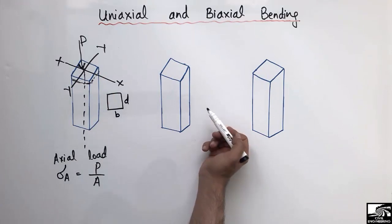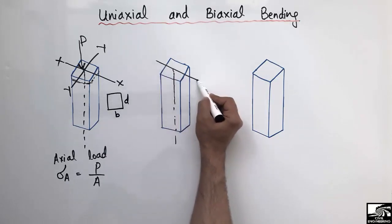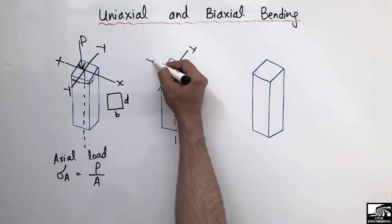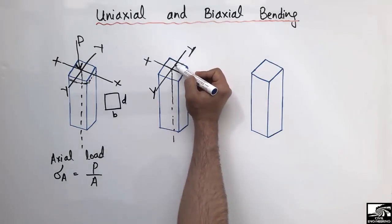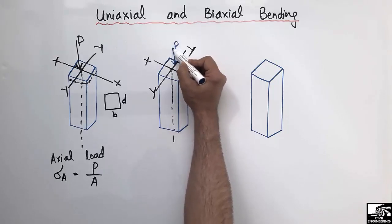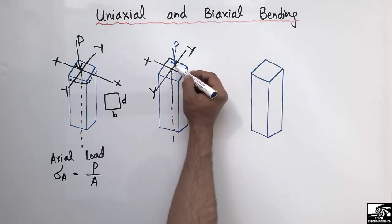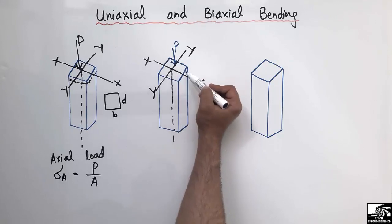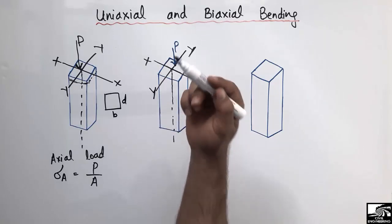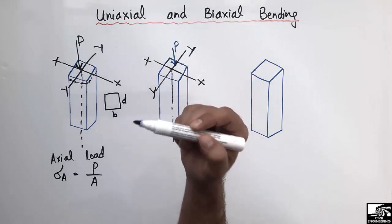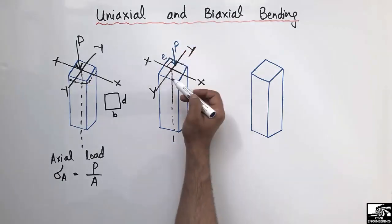Now let's consider the other two types of bending. Consider a column again with its x-axis and y-axis. Now let the load P act away from the center of the column — along the y-axis it is away from the center, but along the x-axis it is still at the center. Because it is eccentric in only one axis, we call this a uniaxial load. The distance of eccentricity is called E.